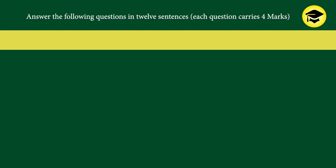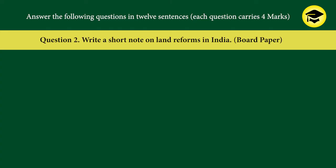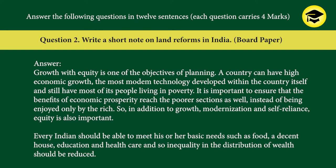Answer the following questions in 12 sentences — each question carries four marks. Question 1: Growth with equity is one of the objectives of planning — justify. Answer: A country can have high economic growth, the most modern technology developed within the country itself, and still have most of its people living in poverty. It is important to ensure that the benefits of economic prosperity reach the poorer sections as well. So in addition to growth, modernization, and self-reliance, equity is also important. Every Indian should be able to meet basic needs such as food, a decent house, education, and health care, and inequality in the distribution of wealth should be reduced.